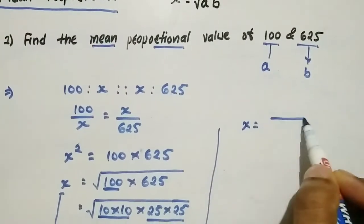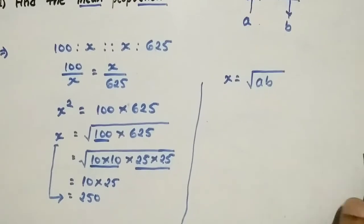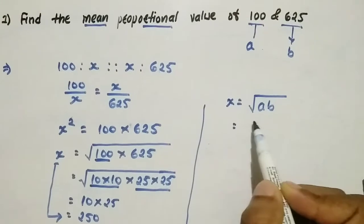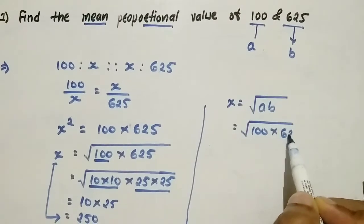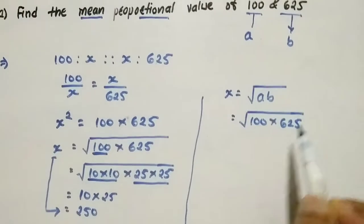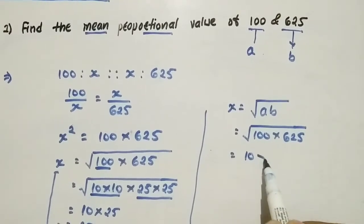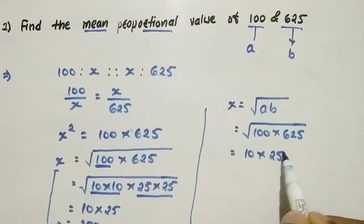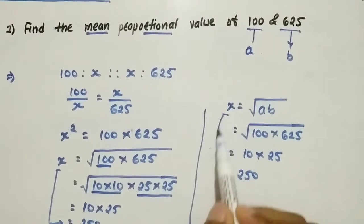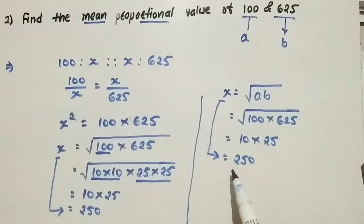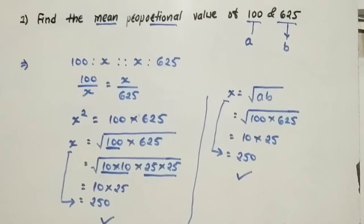We use the formula: x equals square root of a times b, where a equals 100 and b equals 625. Since 100 is 10 squared and 625 is 25 squared, x equals 10 times 25, which gives 250. This is how we can solve it directly.